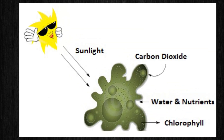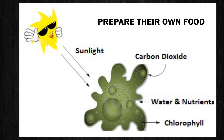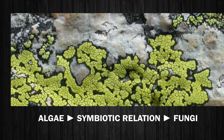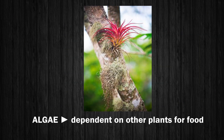Most algae contain chlorophyll pigment and are thus capable of preparing their own food. There are some algae which form a symbiotic relation with fungi — such symbionts are called lichen. There are also some algae which are completely dependent on other plants for food; such algae are called epiphytes.